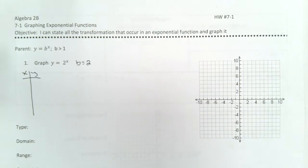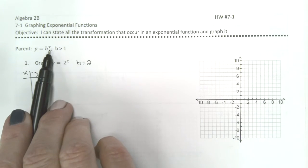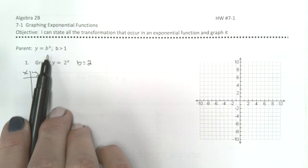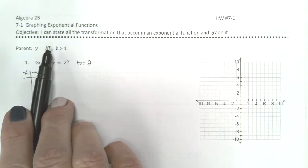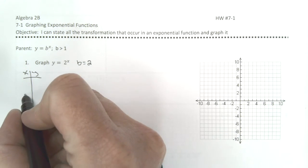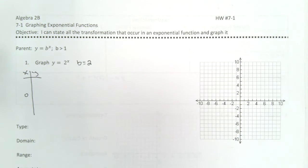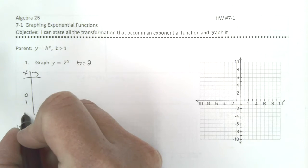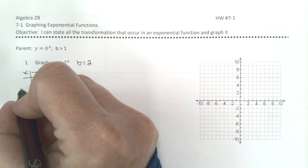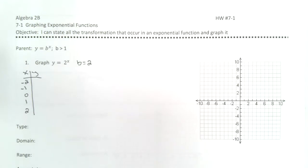So we're just going to start by making a table of values. And my general suggestion is whatever it takes to make this exponent a 0 starts in the middle of your table of values. And then we choose values bigger, bigger, smaller, smaller.